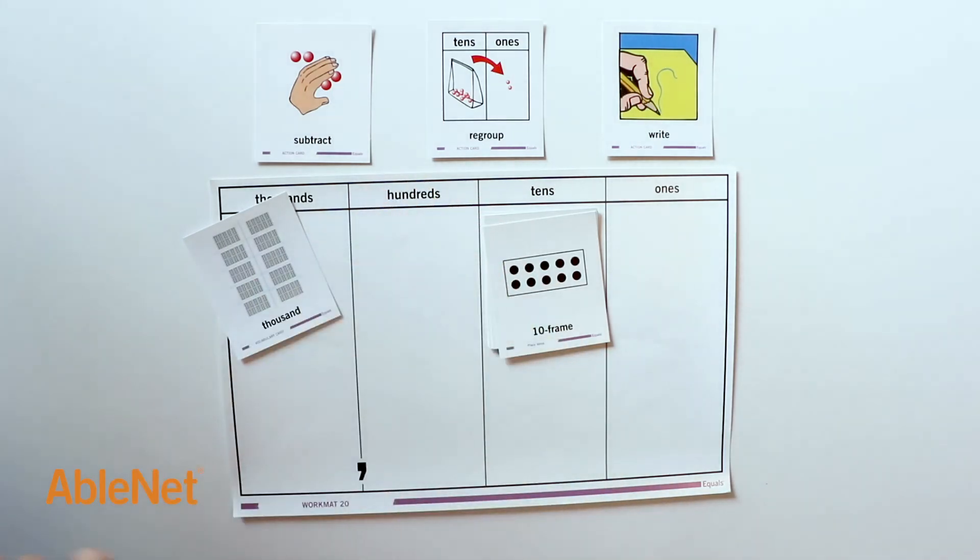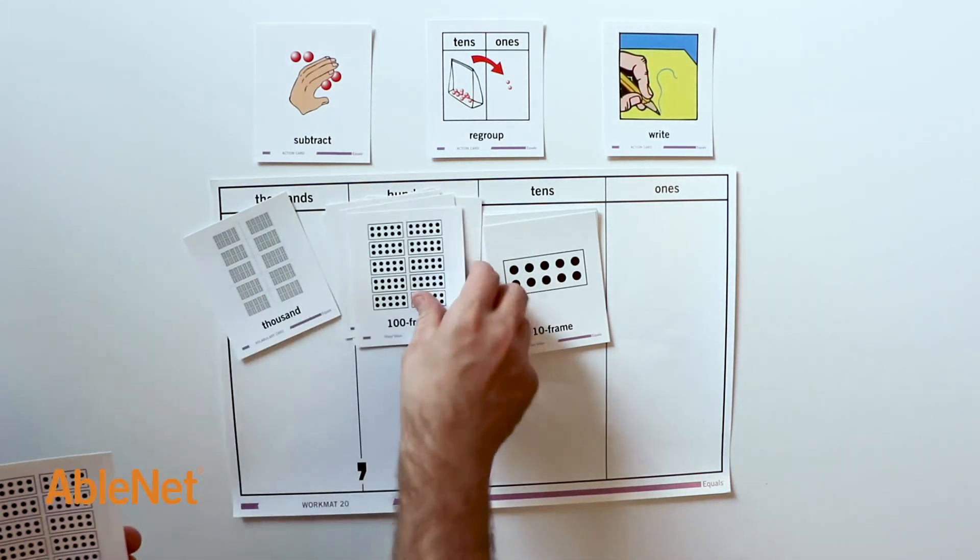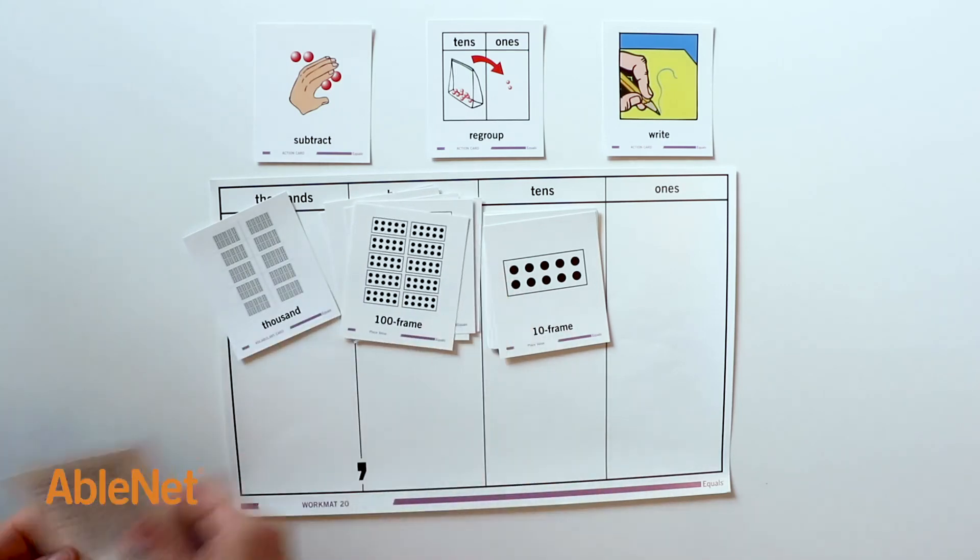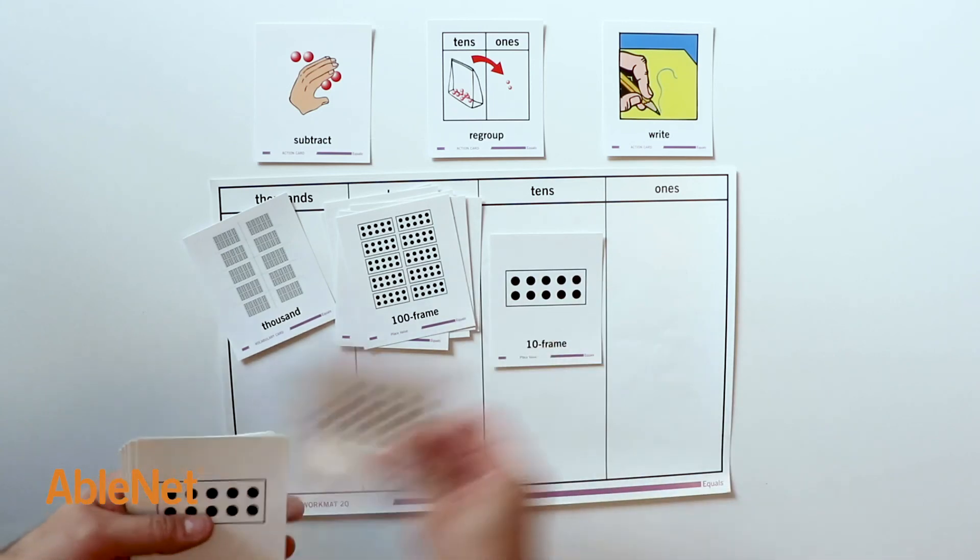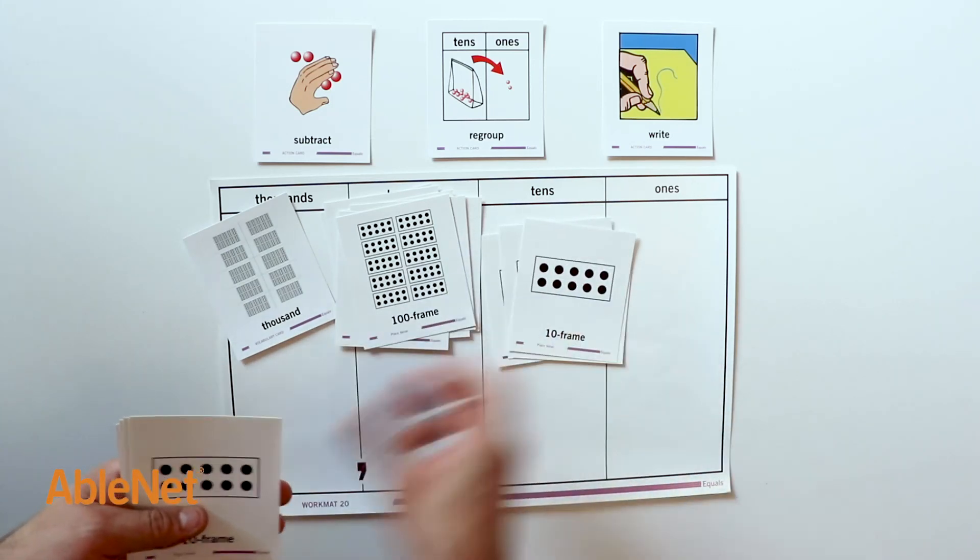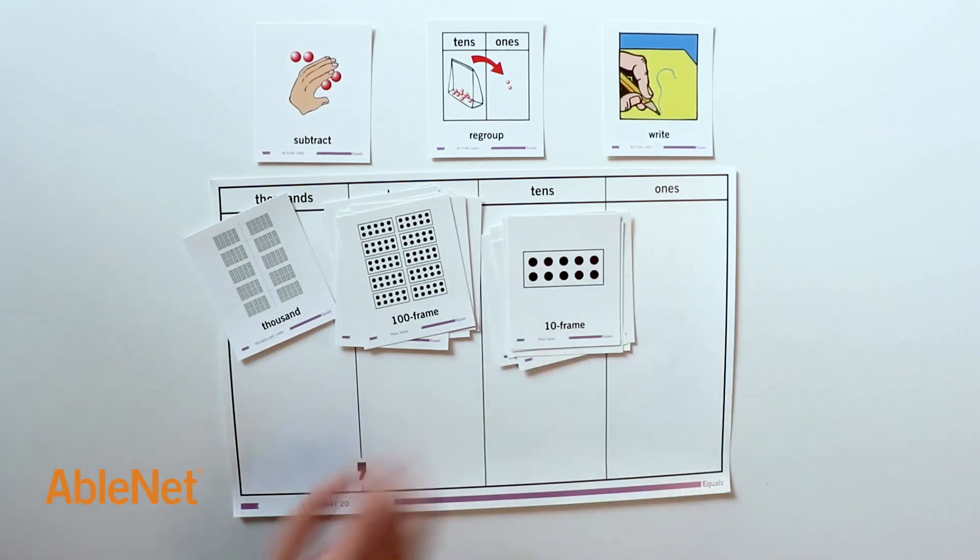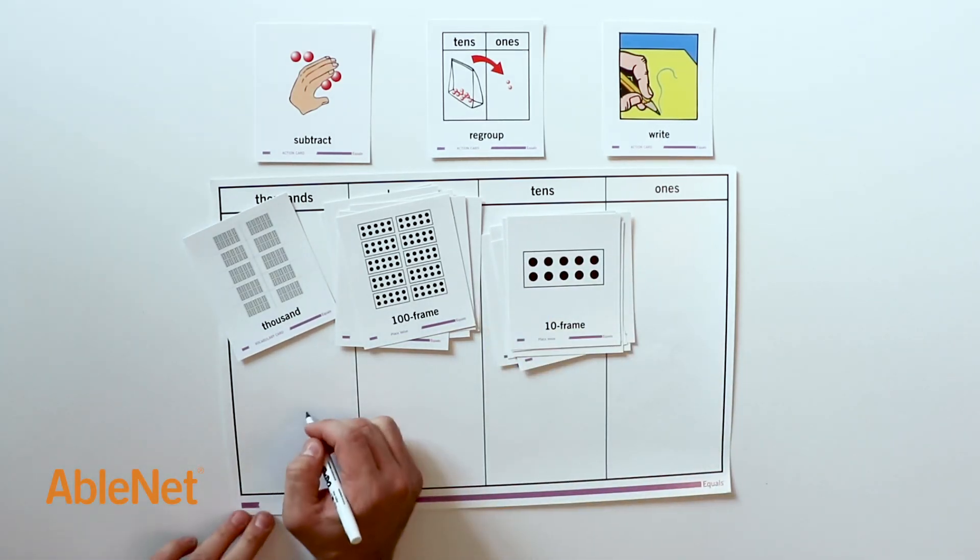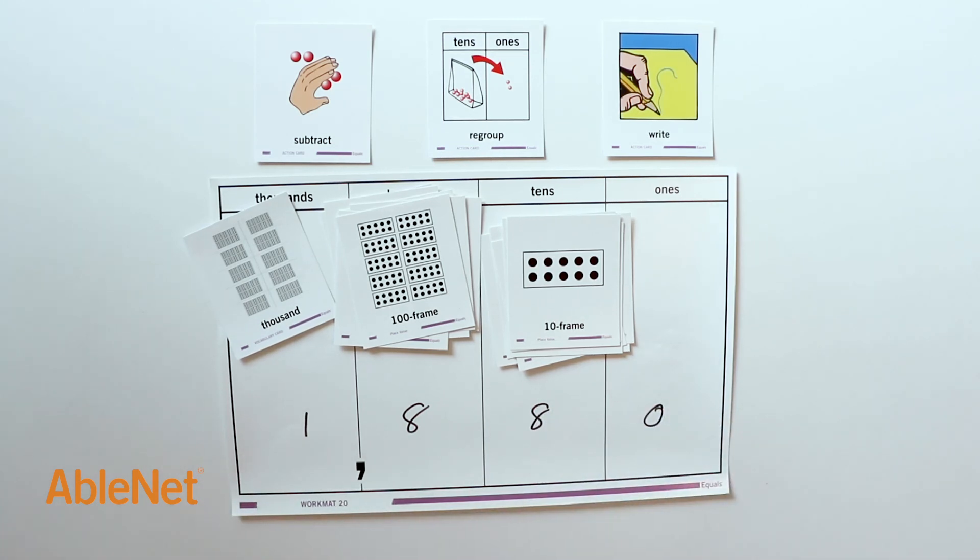Counting our result: 1,000, then 100 through 800, and 10 through 80. Our answer is 1,880. Karen has 1,880 t-shirts left.